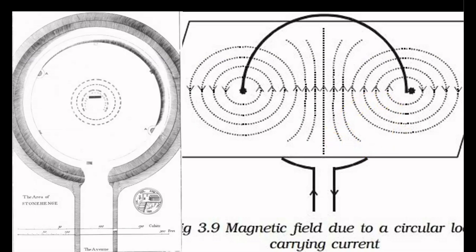So in part one, we defined the mechanics of this system — the magnetic and dielectric fields. Now in part two, I have explained the configuration of the system in relation to these fields: mapping, harnessing, and communicating. So, what happens next? First, let's resume our investigation of Avebury.